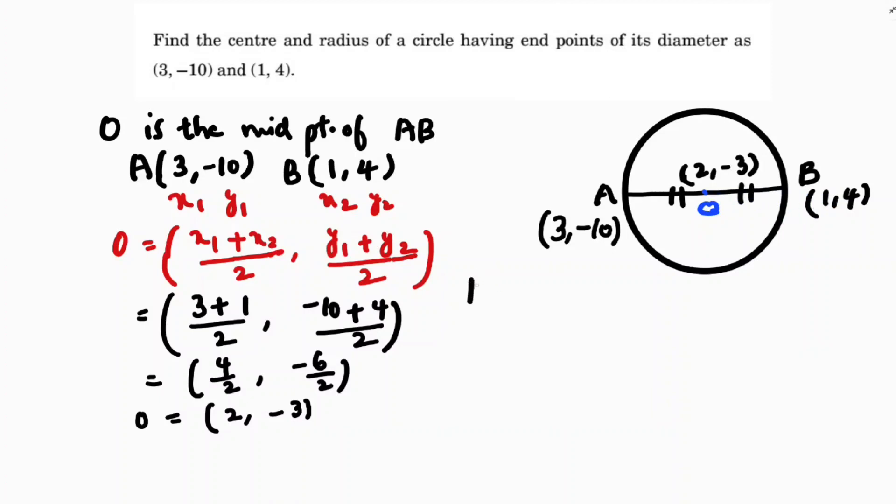So radius is nothing but OA. I will find the distance between O and A. Here O is (2, -3), A is (3, -10).